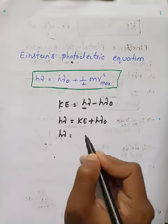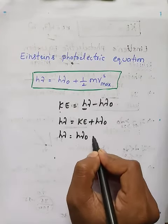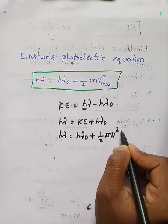Therefore, h nu equals kinetic energy plus h nu naught. Kinetic energy means half mv square.